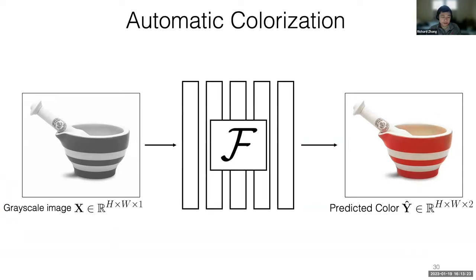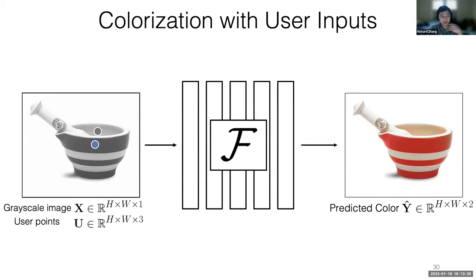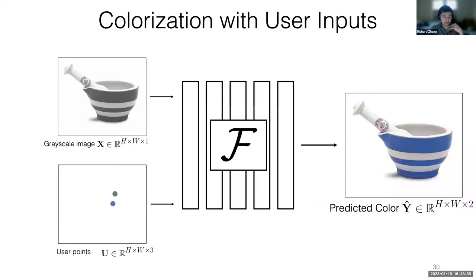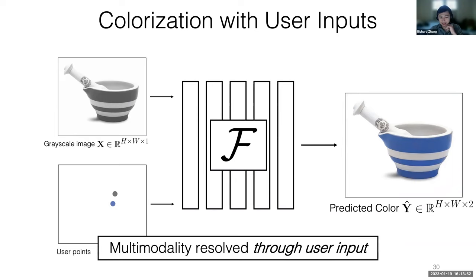So how do we actually modify the system in order to do this? With automatic colorization, our system took a grayscale image, predicted color. Here we're simply adding user points and we basically add that as extra channels. So it's a three dimensional signal. Two of the dimensions are on the AB values, the chrominance values, and the last component is a binary mask telling the system where the user points are. Here we're still dealing with this multimodal problem, but in a sense it's being continuously resolved for us through the user input. With enough user input, the problem instead of becoming multimodal starts becoming a unimodal problem, which is much easier to predict.